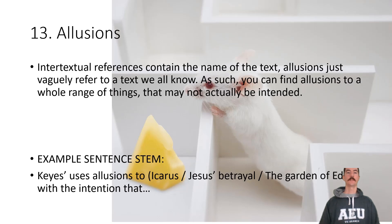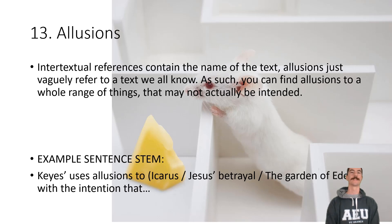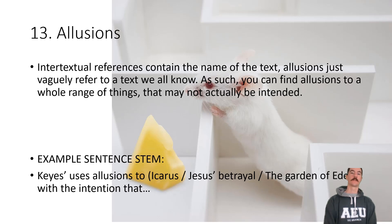The last technique is allusions. Intertextual references name the text directly, whereas an allusion just references it indirectly. For example: 'Keyes uses allusions to Icarus, Jesus, and the portrayal of the Garden of Eden with the intention that...' — finish that off and identify his purpose.